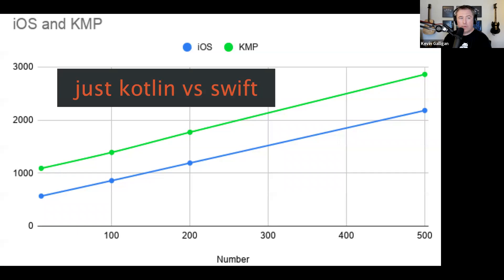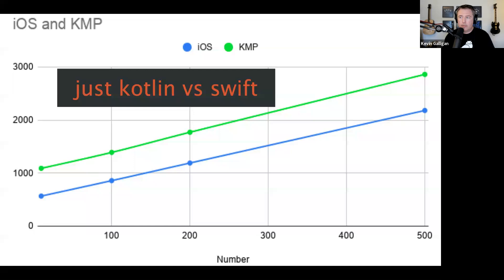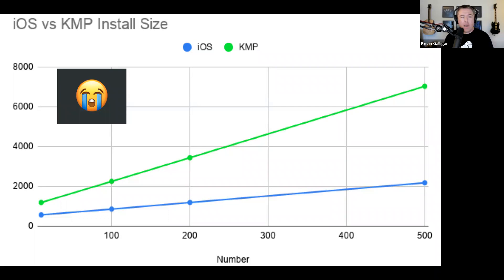We generated a bunch of simple classes to measure the binary size delta. If you look at the results, Kotlin and Swift as you add more simple classes show a very linear increase — it's not bad. But we started this exploration because somebody reported adding a bunch of Kotlin made the binary terrible. Our first tests showed it was certainly not linear — Kotlin was way bigger.